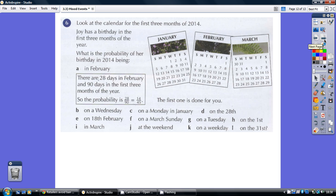And question six to finish. Have a go. So again, we're told that there are 90 days in the first three months, so 90 is always the number on the bottom. And then again, we're just going through and adding up the number that we think is appropriate for the top.